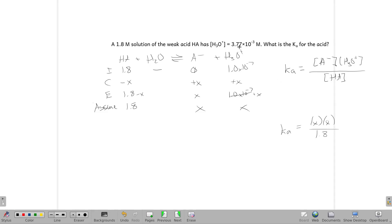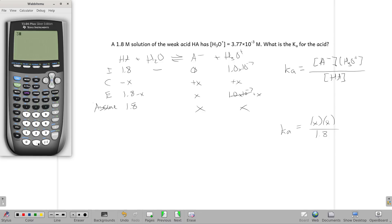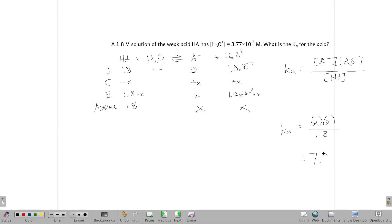In this case, our X is the H3O concentration. So 3.77 times 10 to the negative third, we will square that and then divide by 1.8. And we get a Ka of 7.9 times 10 to the negative sixth.